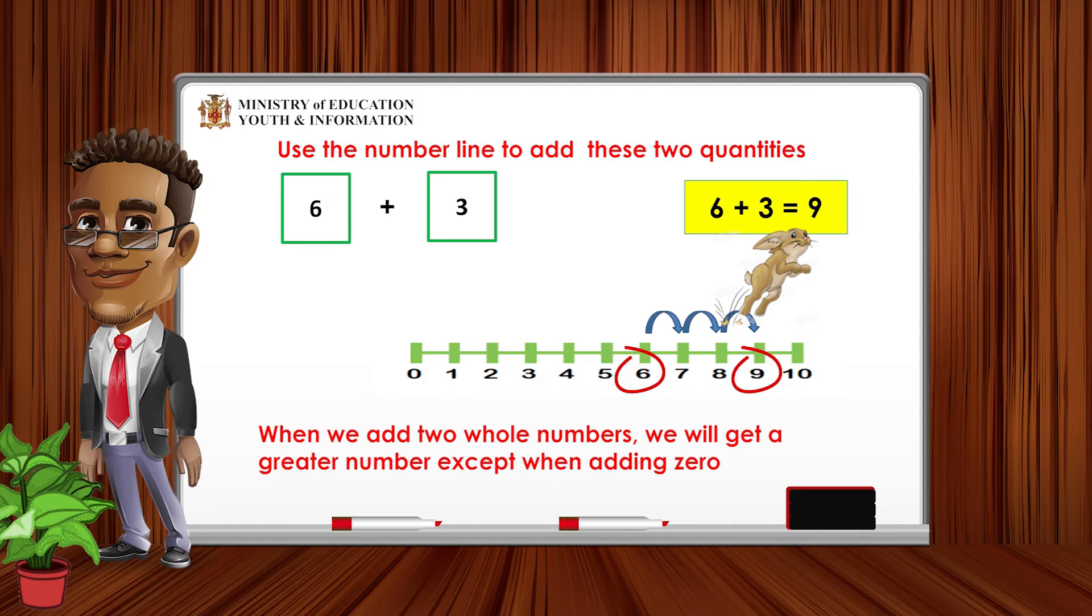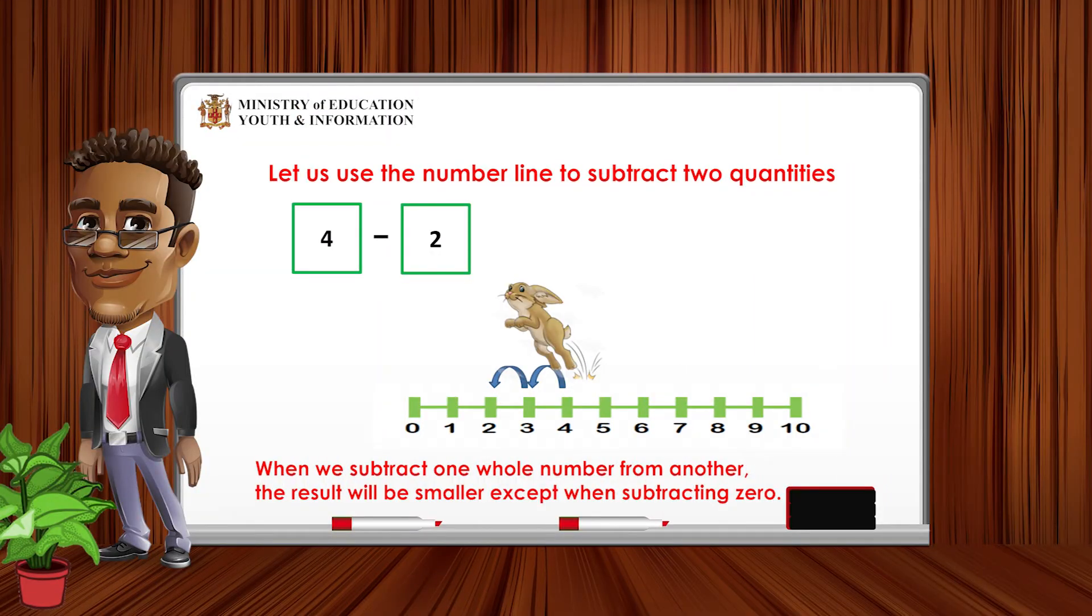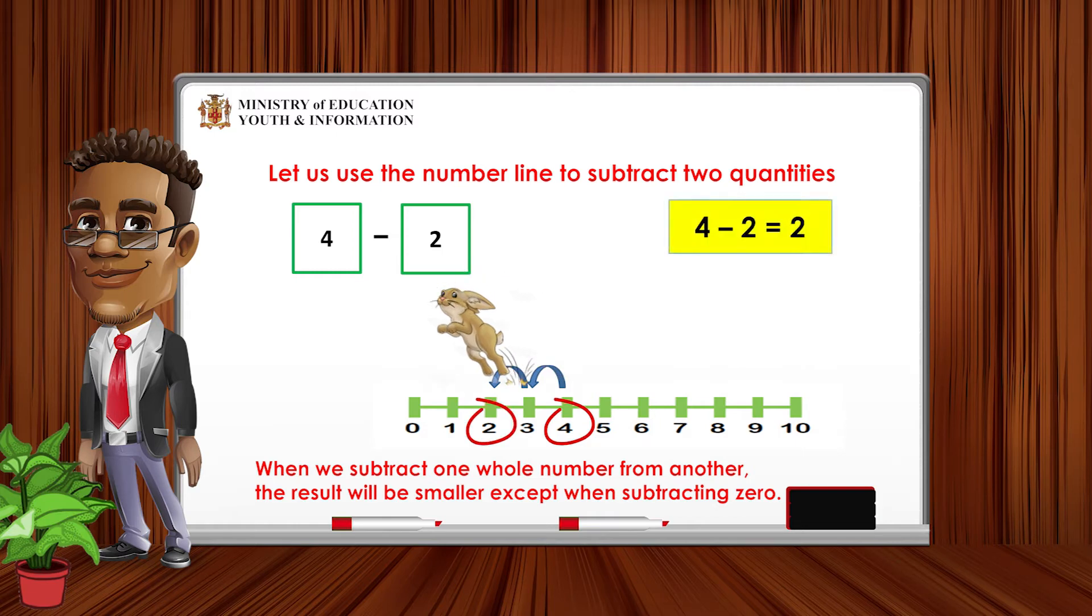Let's try another problem. 4 subtract 2. The first quantity is 4, so let's start there. Because we are subtracting, the result will be smaller. Well, here we will be subtracting 2 from 4. So the bunny will jump backwards. Which number did the bunny land on? If you said 2, you are correct. When we subtract one whole number from another, the result will be smaller except when subtracting 0.